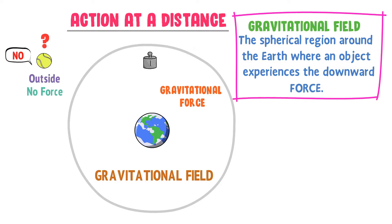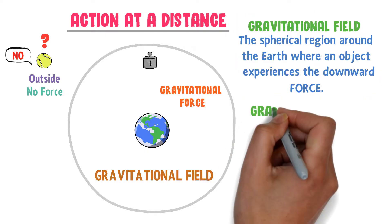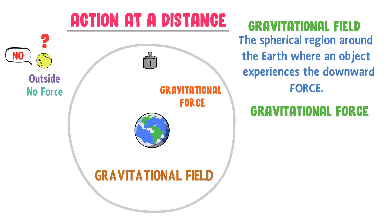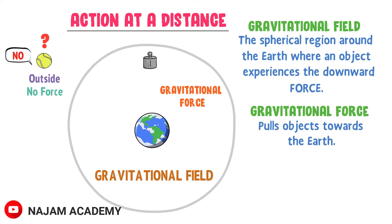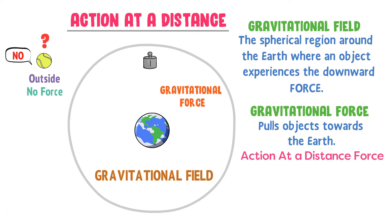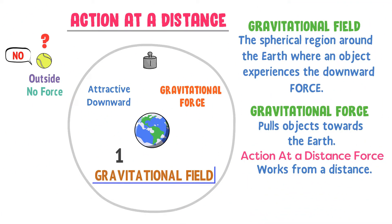The gravitational field is defined as the spherical region around the earth where an object experiences the downward force. Gravitational force is the attractive force that pulls objects towards the earth. Remember that gravitational force is an action at a distance force — it can work from a distance. Gravitational force is always attractive and acts in the downward direction. From this example, we learn two fundamental concepts: first, there is a gravitational field around the earth; second, an object present in that gravitational field experiences the downward force of gravity.